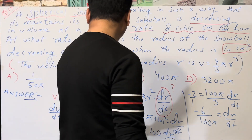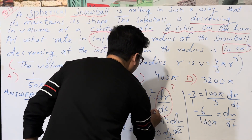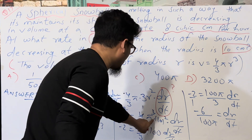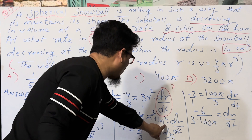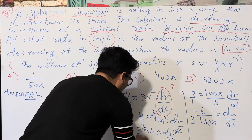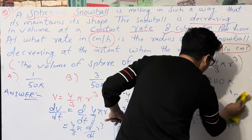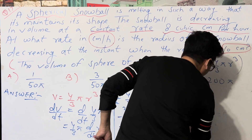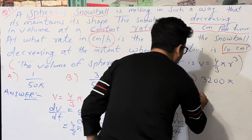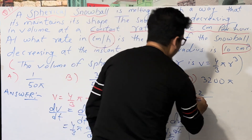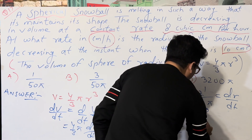Let me recheck: dV/dt = -8, and the formula gives (4/3)π · 3r² · (dr/dt). The 3 and the 3 in the denominator cancel, leaving 4π · r² · (dr/dt). With r = 10, that's 4π · 100 · (dr/dt) = 400π · (dr/dt). So dr/dt = -8 / (400π) = -1/(50π).